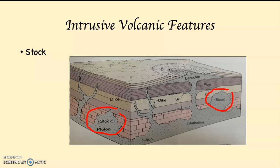A stalk is the second largest intrusive igneous or intrusive volcanic feature. Its main characteristic is that it's not as big as the batholith — it comes in second. It's a little bit like who came in second in the World Series, the NBA Finals, or the Super Bowl. If it's less than 40 square miles, we call it a stalk.